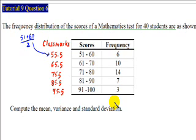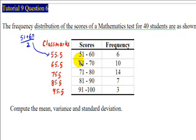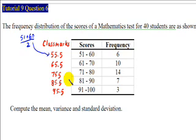There are five classes. The first class is from 51 to 60, so the class mark is 55.5 — this is the average of 51 and 60. Similarly, the class mark for the second class is 65.5, for the third class is 75.5, for the fourth class is 85.5, and for the fifth class is 95.5.